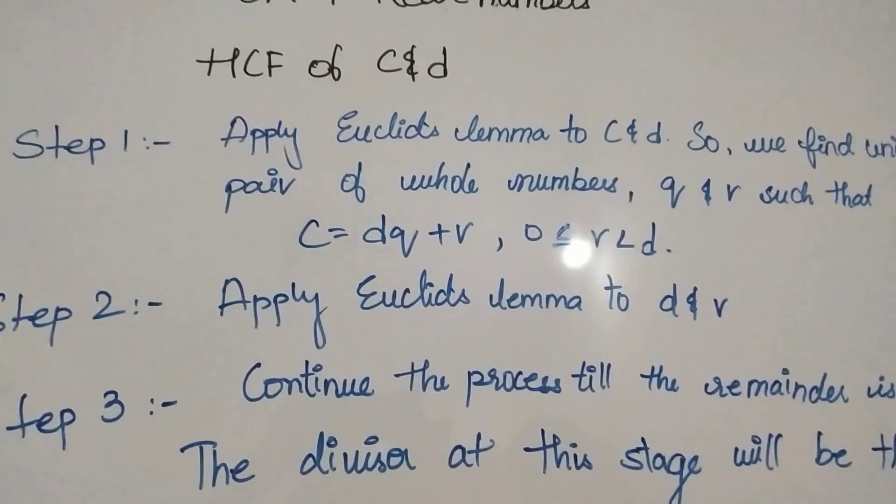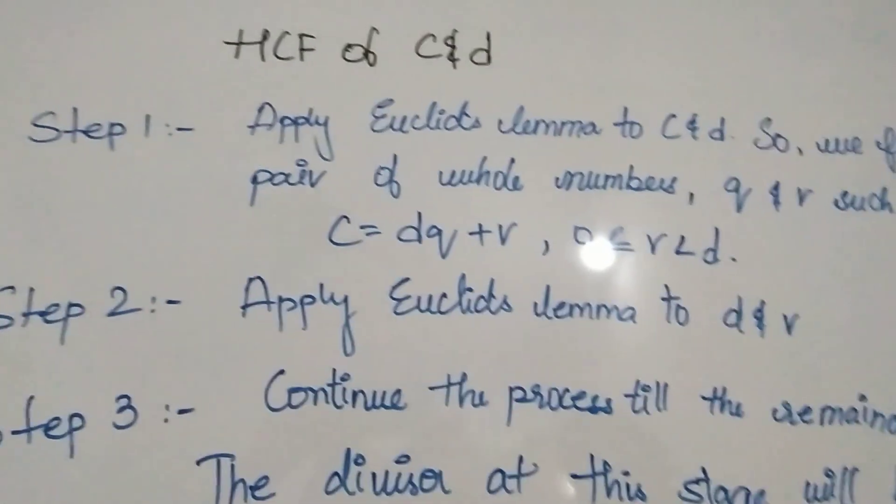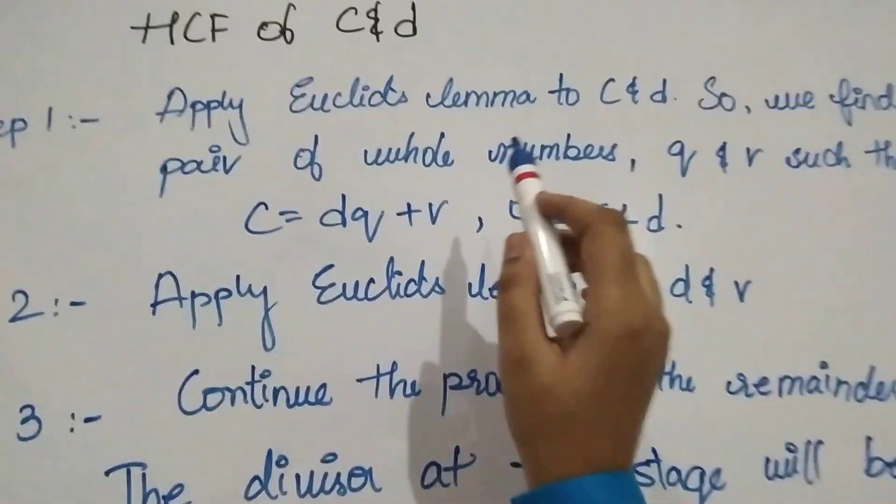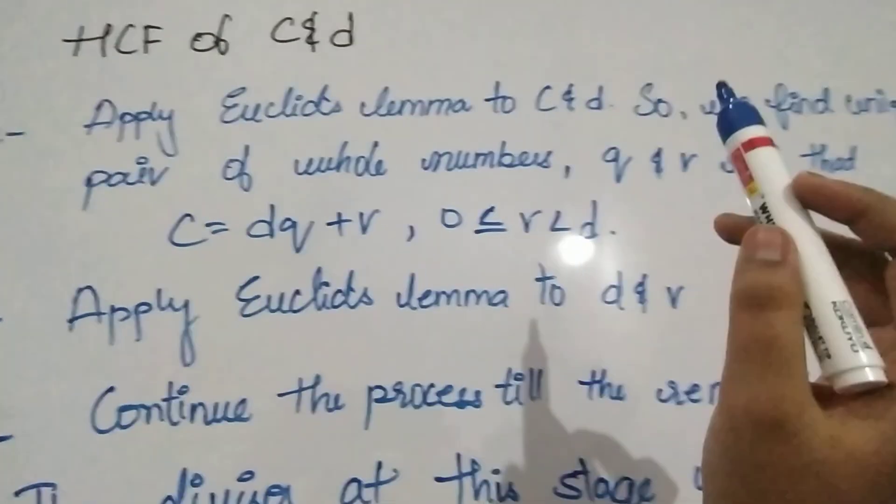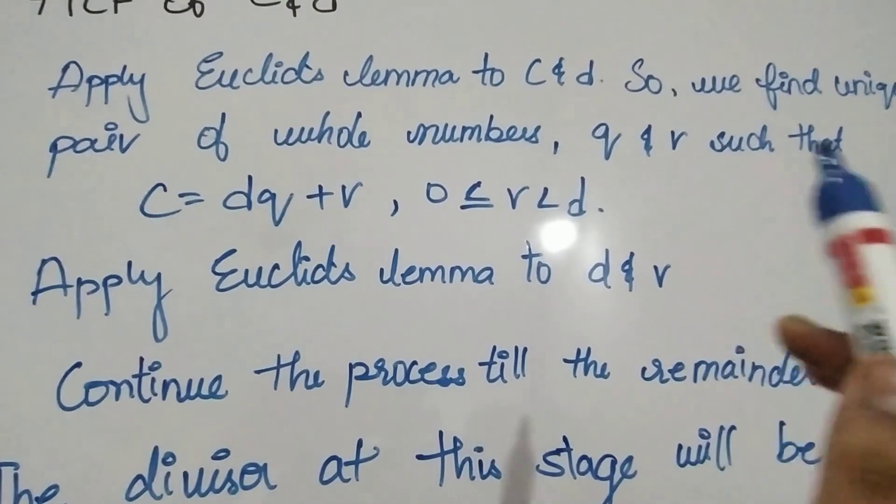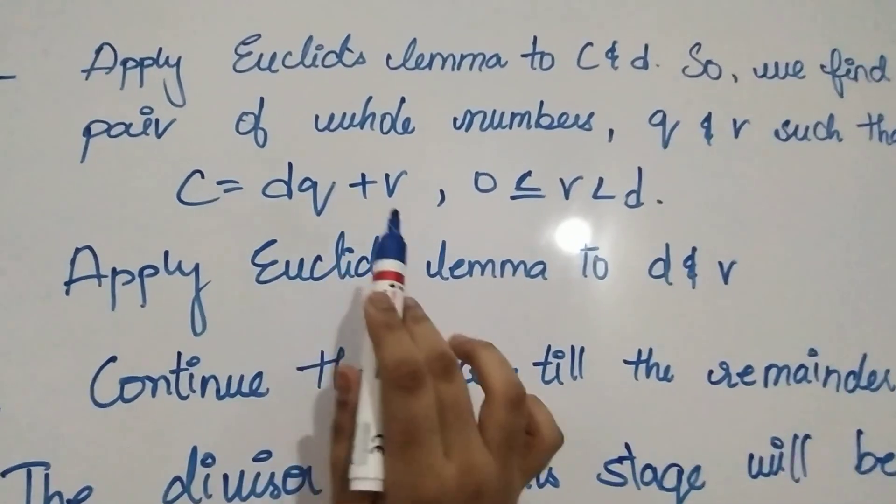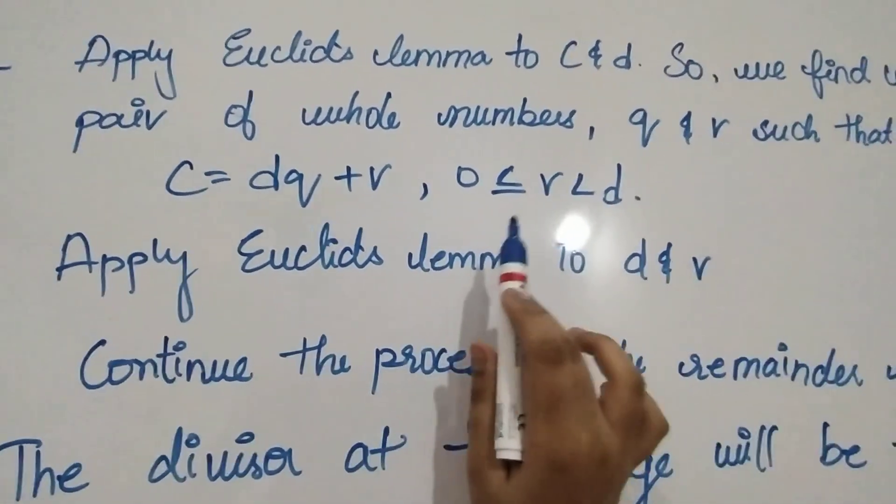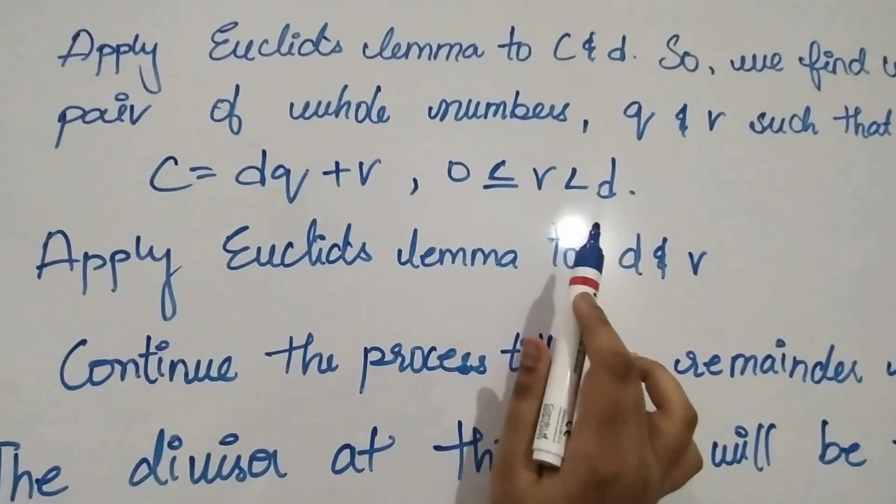Let us now find out the HCF of C and D. Step 1, apply Euclid's lemma to C and D so that we find unique pair of whole numbers Q and R such that C is equal to DQ plus R, 0 less than or equal to R, R less than D.